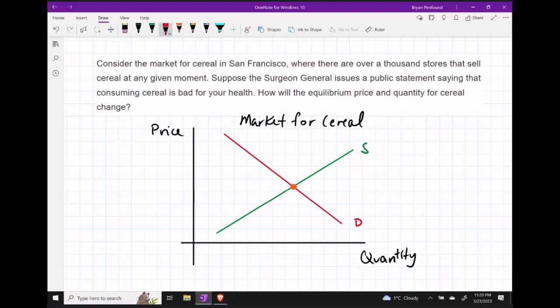Let's also suppose the Surgeon General suddenly issues a public statement saying that consuming cereal is bad for your health. How are the equilibrium price and quantity for cereal going to change?